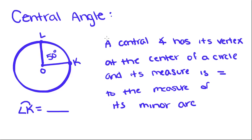So now we have what's called a central angle. A central angle has its vertex at the center of a circle, and its measure is equal to the measure of its minor arc. So if this angle equals 50 degrees, then this arc — which is a minor arc because it's less than half a rotation — the measure of arc LK is 50 degrees. Now that only works with central angles, so don't try to use that principle for any other kind of angle.